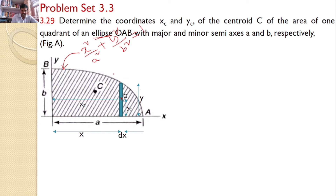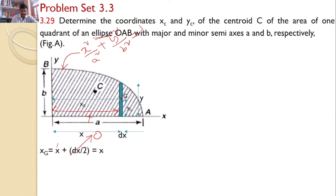If I integrate XG and YG over the entire area, I will get XC and YC. Clearly, the distance is X and the thickness is DX. So XG is equal to X plus DX/2, but DX/2 is very small and can be neglected compared to X. Hence XG = X. And YG = Y/2, exactly at the center. The area of the strip, DA = Y · DX.